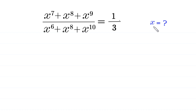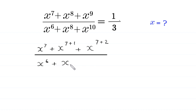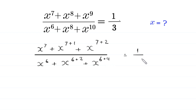So let's start. x to the power 7 plus x to the power 8 — this 8 can be written as 7 plus 1 — plus x to the power 9 — this 9 can be written as 7 plus 2 — divided by x to the power 6 plus x to the power 8 — this 8 can be written as 6 plus 2 — plus x to the power 10 — this 10 can be written as 6 plus 4 — is equal to 1 over 3.